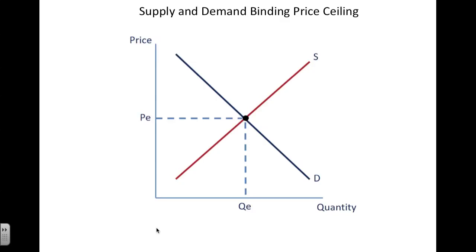Supply and demand can also be imbalanced as a result of government policy. When the government creates policies that interrupt the natural forces of supply and demand, we end up with a disruption of equilibrium.